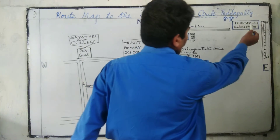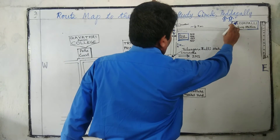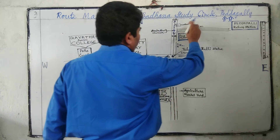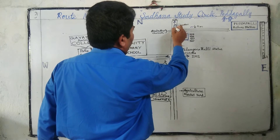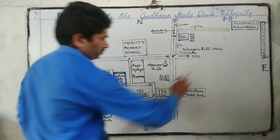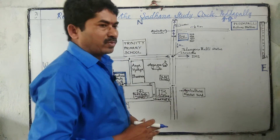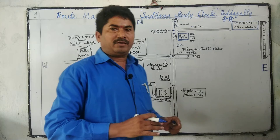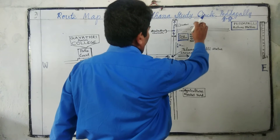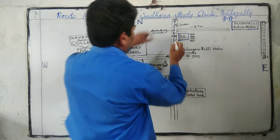First, starting from Pedapalli railway station, approximately we have a half-kilometer two-way road. North is up, South is down, East is to the right, West is to the left. First we have to know these directions, then only we can read the map.